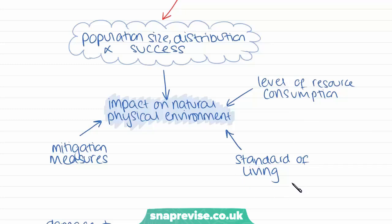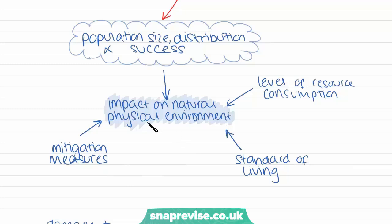It also relates to standard of living. People in highly developed countries consume a lot more than people in low-income countries, so this has a massive impact on the environment, as there is often more pollution in certain countries. There are also many mitigation measures put in place to reduce environmental impact. So there's a two-way relationship: the environment allows humans to sustain life, but humans use the resources of the environment and can end up damaging it.